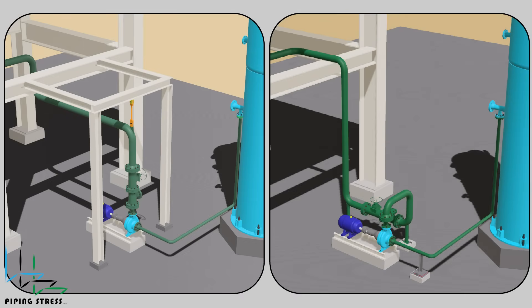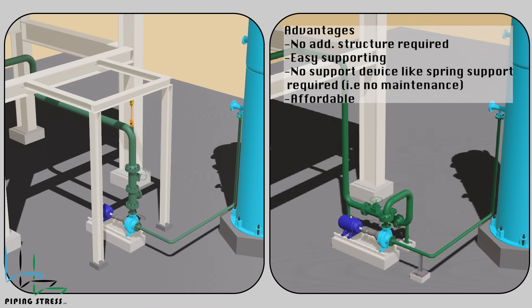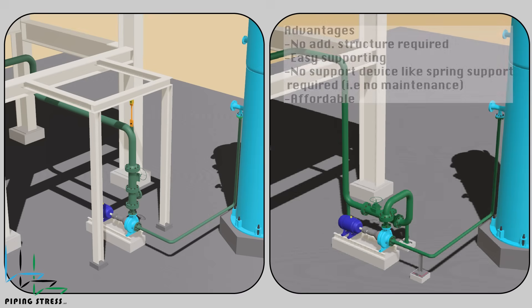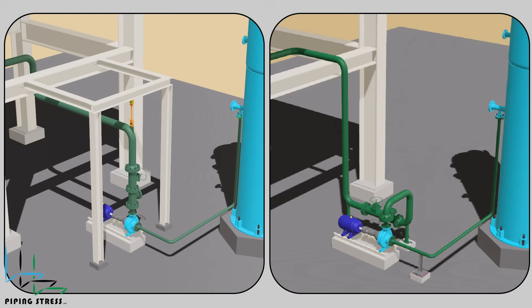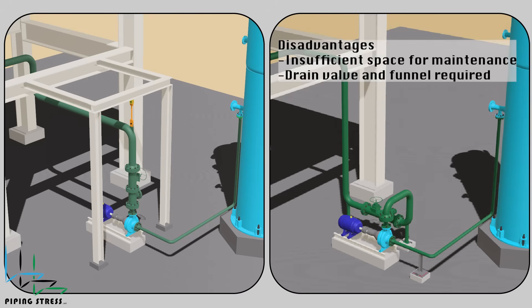Comparing these two designs, the valve design lowered to ground level is more manageable and cost-effective from a piping stress engineering perspective compared to the design stacked on the pump nozzle. There is no structure requirement and no supporting devices such as spring hangers are needed, all of which impact cost. The disadvantages are insufficient space for maintenance and a drain requirement between the valves due to the pocket created.